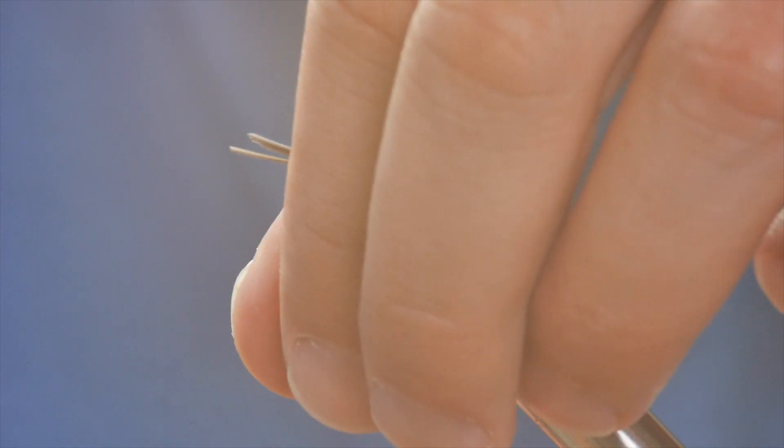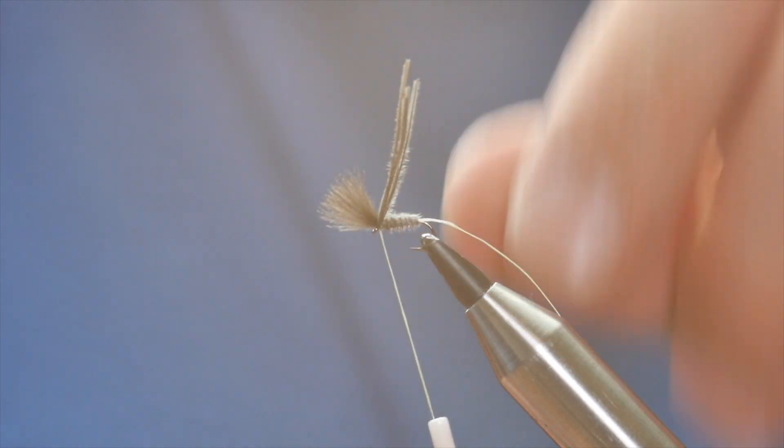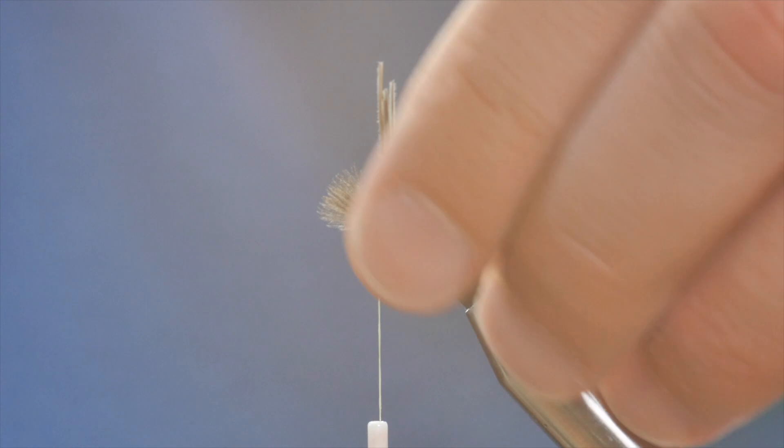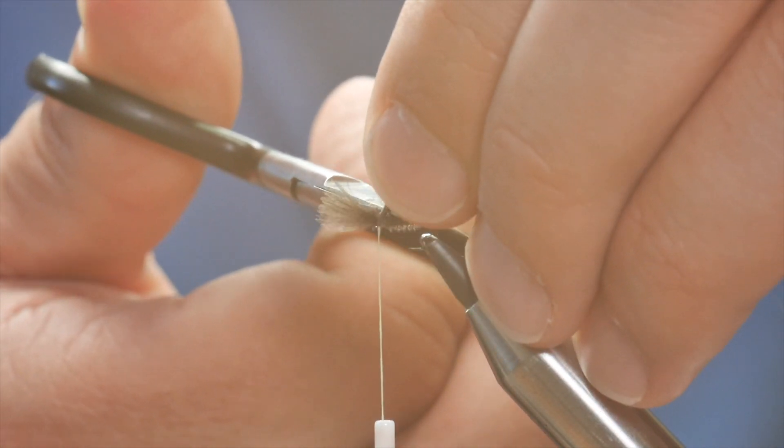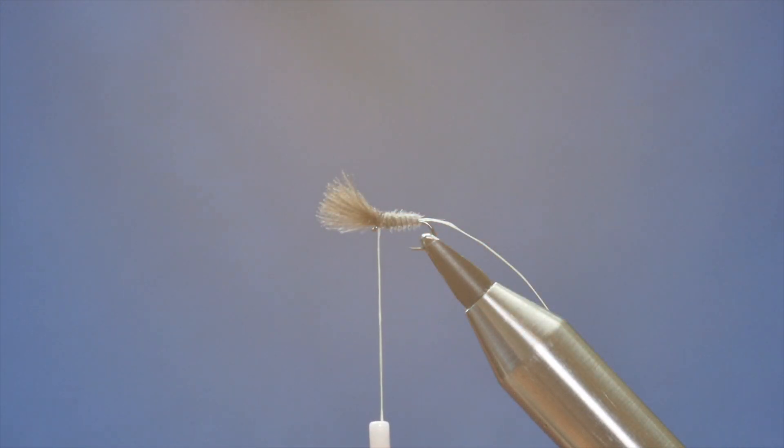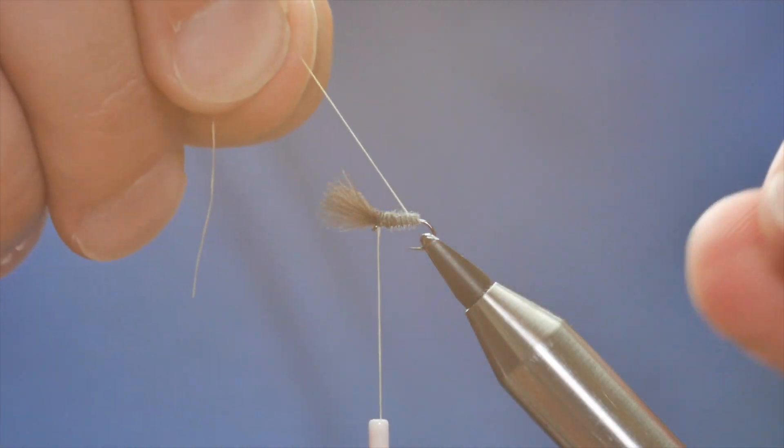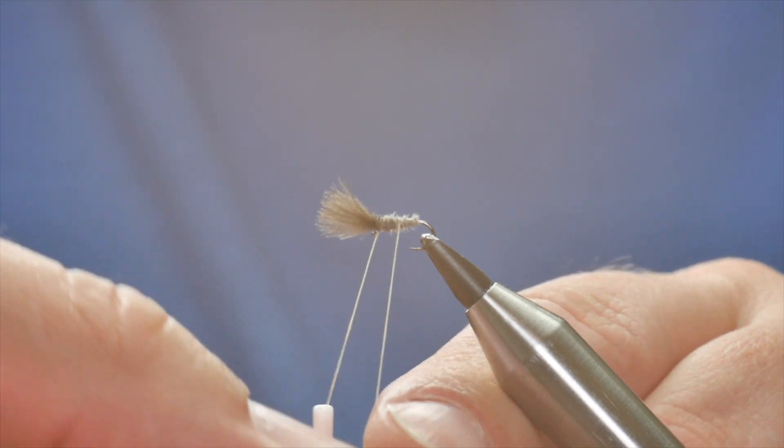At this point, I'm going to sweep everything back with my thumb and forefinger and just bring my thread to the eye of the hook. So before I bring up my rib, I'm going to come in and remove my waste. I've got my ribbon feather here. And as I brought my feather towards myself, the rib is going to go in the opposite direction.